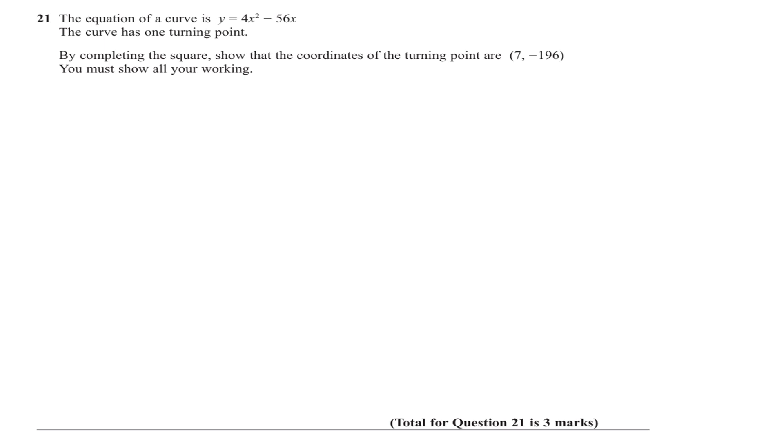This is a grade 9 topic, higher tier only, from an Edexcel higher past paper, paper 3 I think. Question 21: The equation of a curve is y = 4x² - 56x. The curve has one turning point. By completing the square, show that the coordinates of the turning point are (7, -196). You must show all your workings.